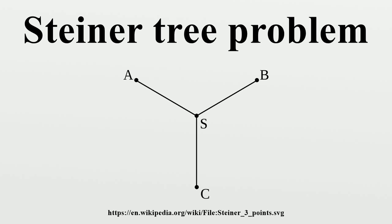Steiner trees have also been studied in the context of weighted graphs. In the general Steiner tree problem, we are given an edge-weighted graph G and a subset S of V of required vertices. A Steiner tree is a tree in G that spans all vertices of S. In the optimization version, the task is to find a minimum-weight Steiner tree. In the decision version, we are given a value K and the task is to determine whether a Steiner tree of total weight at most K exists.